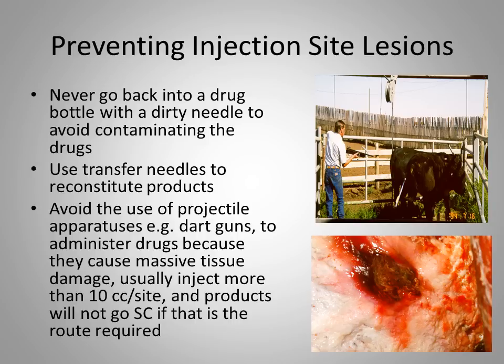For products such as modified live vaccines that have a liquid and a dry portion, we should try to use transfer needles — double-edged needles — to reconstitute the products. We should also avoid the use of projectile apparatuses such as dart guns or stock doctors to administer drugs, because these administer product at high velocity and high pressure, injections are frequently given in the back end of cattle, and more than 10 mL per injection site is commonly used — all against beef quality guidelines to reduce tissue damage.